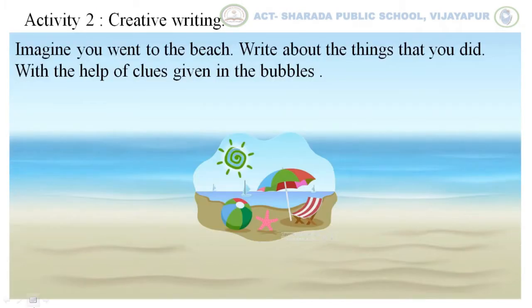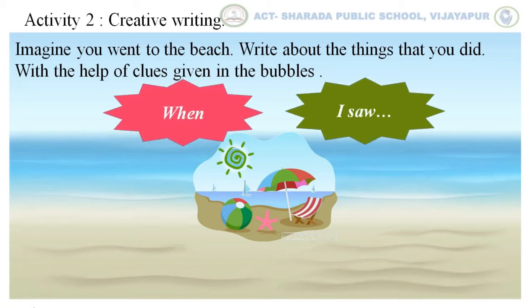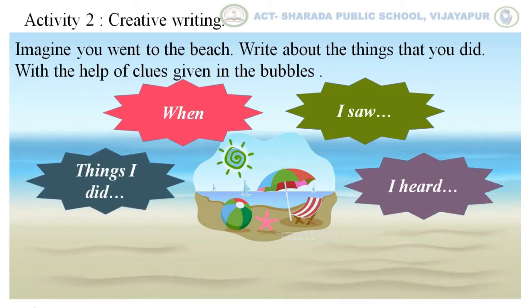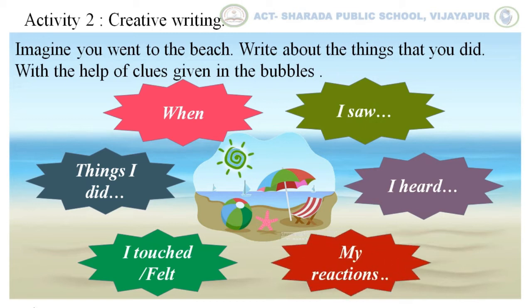Activity 2. Creativity. You went to the beach — write about the things that you did with the help of clues given in the bubbles. Children, let us look at the bubbles: things I saw, things I did, I heard, I touched or felt, my reactions.